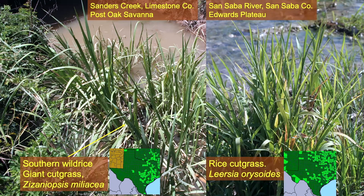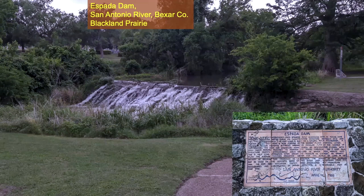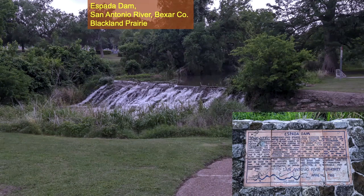Look at the overlap — they both occur in some of the same counties and regions. Both of them grow right out in the water. If you go down toward the mission areas in San Antonio, we had a workshop down there last year. This Espada Dam was completed in 1745 — crude construction back then, but it is holding after nearly 300 years and it's still there.